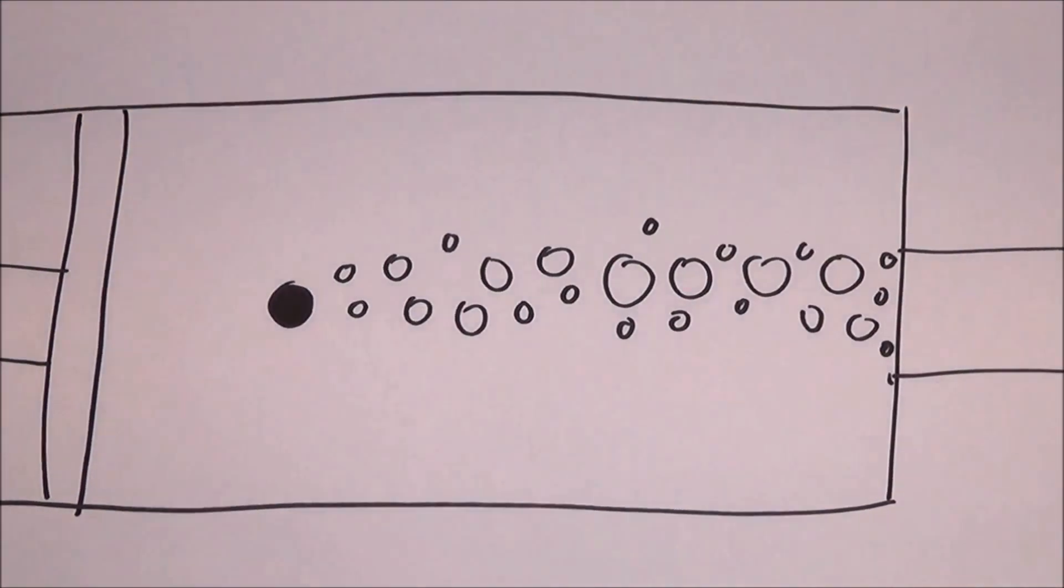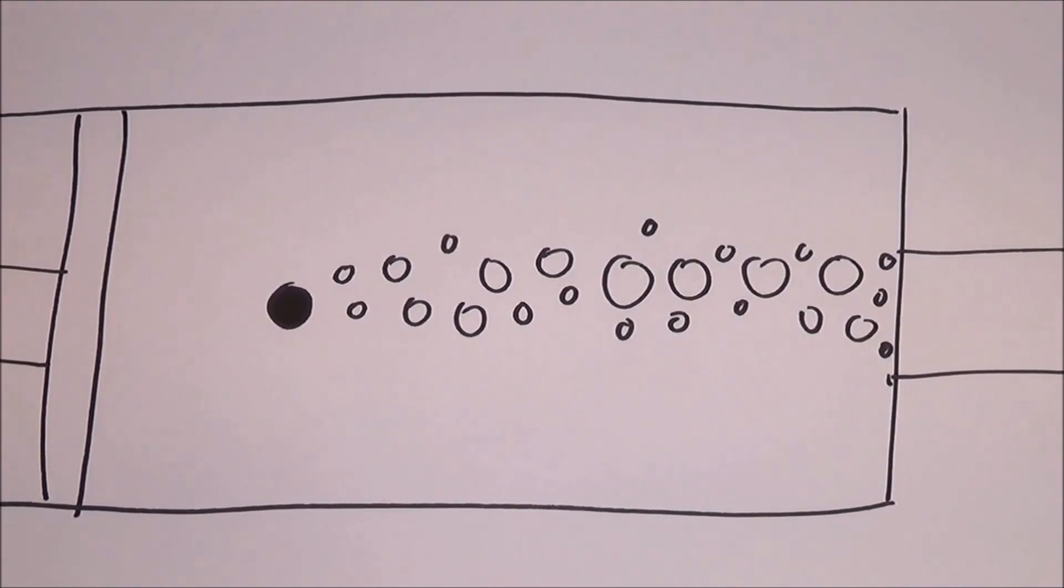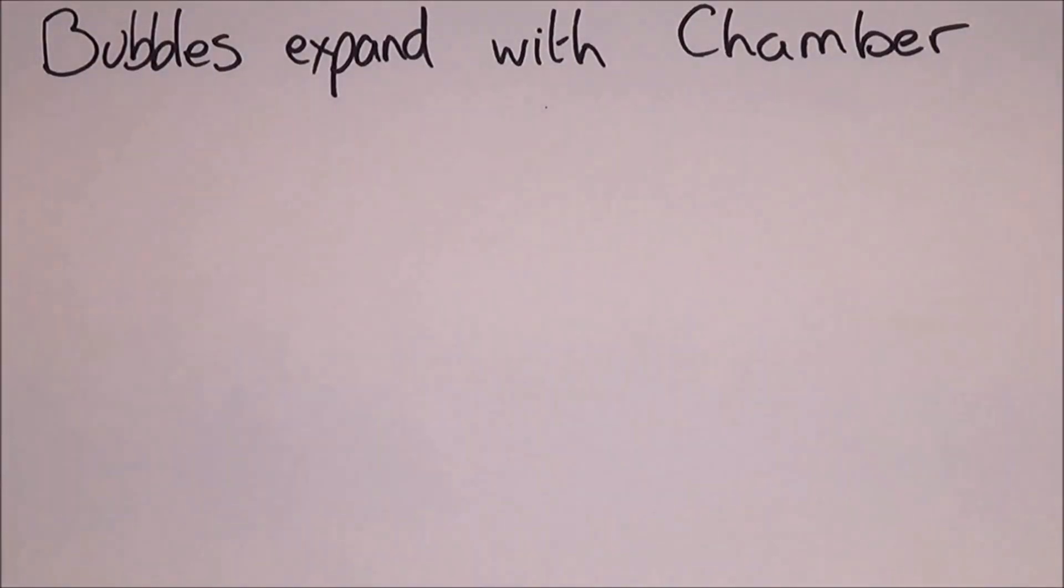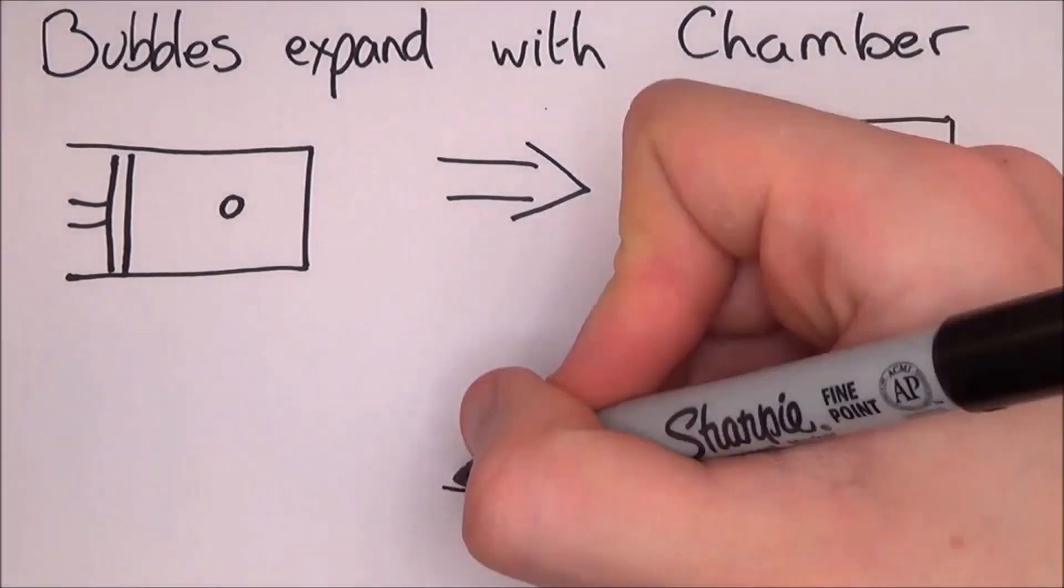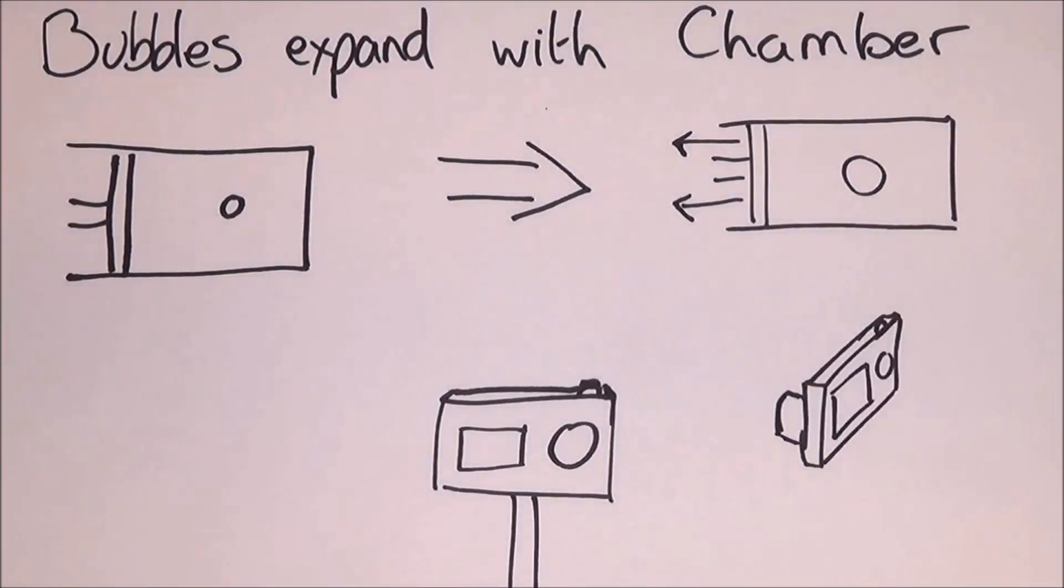This creates microscopic bubbles. The bubble density around the tracks is proportional to energy lost by the particles. Now the bubbles expand as the chamber does, so the chamber has to get really big before they can actually be photographed. To do this, they put several cameras around the chamber so they can create a 3D image of it.